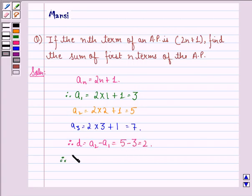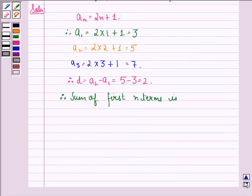Therefore, the sum of first n terms is S_n, that is equal to n by 2 into a plus n minus 1 into d.